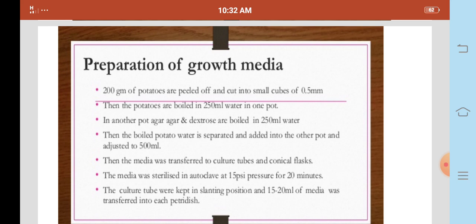The tube was kept in slanting position and 15 to 20 ml of media was transferred into each petri dish. The media was released in the slanting position in the test tubes. The media was transferred to the petri dish.